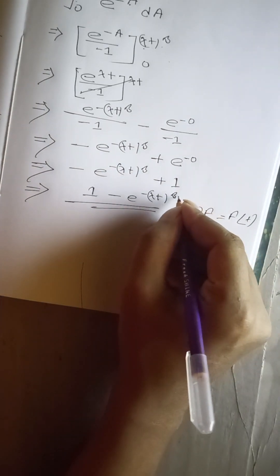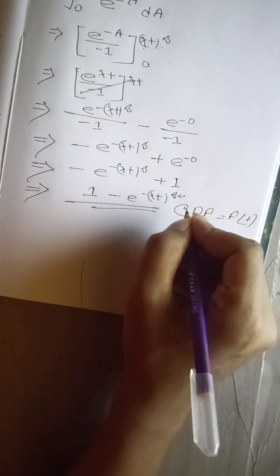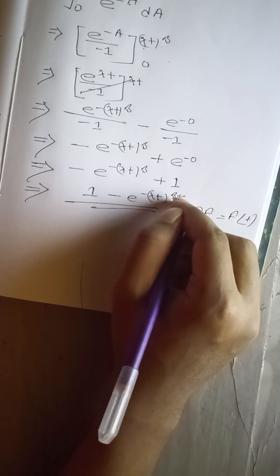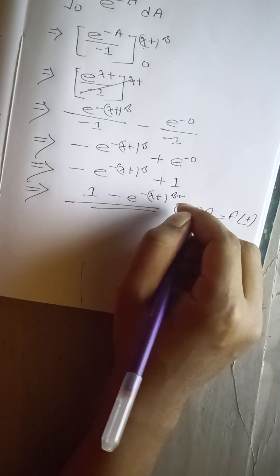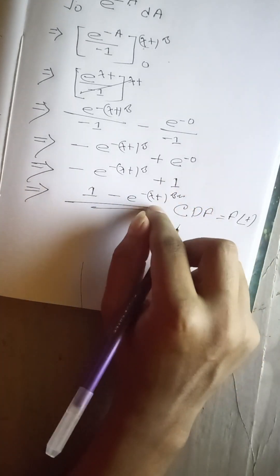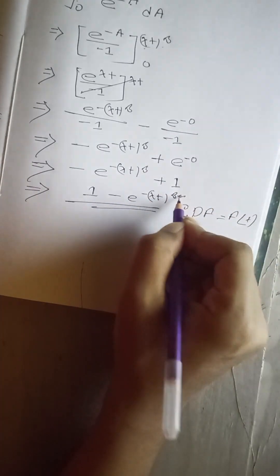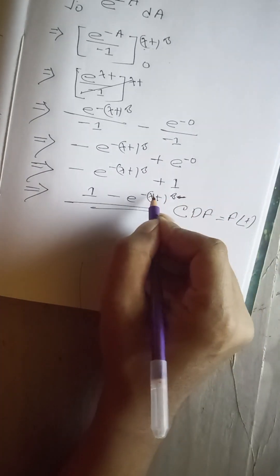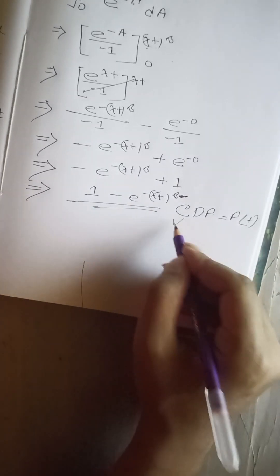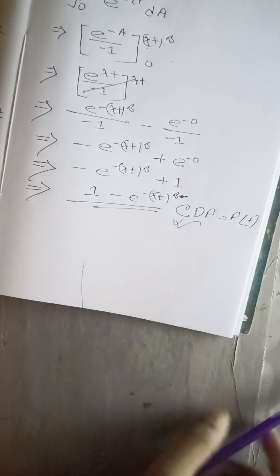As a warning: β here is the shape parameter — sometimes written as α in other references, so don't make that mistake. For this case, we consider β as the shape parameter and λ as the scale parameter. This is our desired answer. Thank you very much.